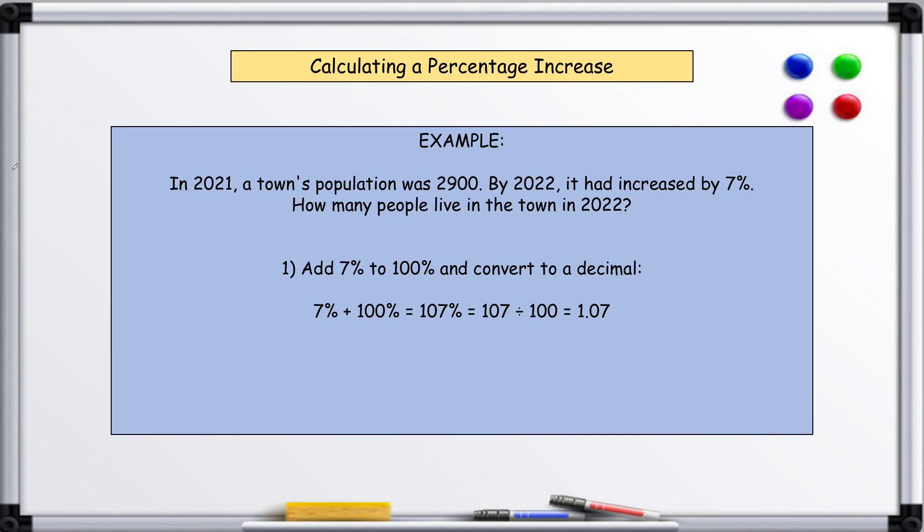So 7 plus 100 is 107, and then we just divide by 100 to get 1.07. So to calculate the increase of 7%, you just multiply by 1.07. So 2,900 multiplied by 1.07, which is our percentage increase, gives us 3,103. This is how many people live in the town in 2022.